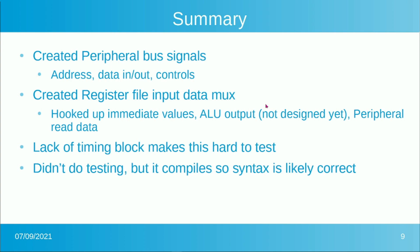In summary, what we've done is created a peripheral bus with address, data in and out, and the controls. They're not really doing anything yet and we haven't tested them, but we did hook them up so the register file data mux accommodates them. Creating that register file input data mux was the main thing we did here, along with identifying the signals. We named the peripheral address signal so you don't have to look up which bits of the instruction it comes from. The ALU isn't designed yet so we put a fake zero value on there, and peripheral read data was hooked up. This does compile, so syntax is likely correct.